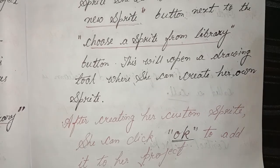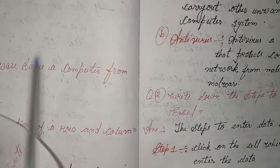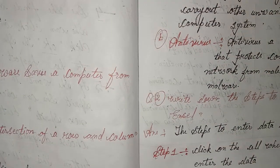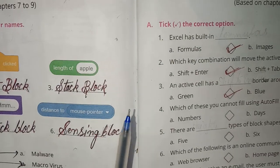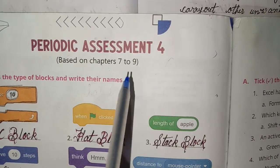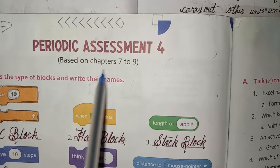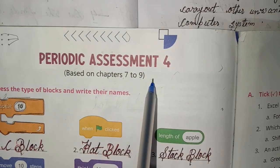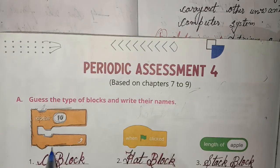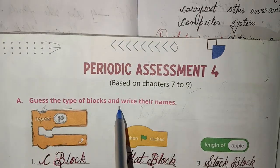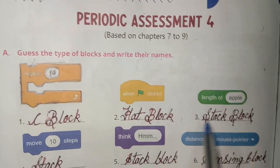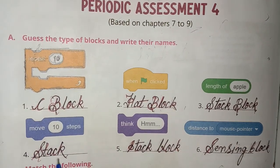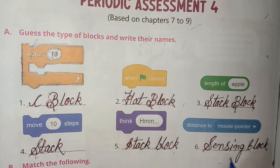I have done all the questions in this lesson. After that, I will solve Periodic Assignment 4 based on Chapters 7 to 9. First, guess the type of blocks and write their names. Answer: C block, hat block, stack block, sensing block.